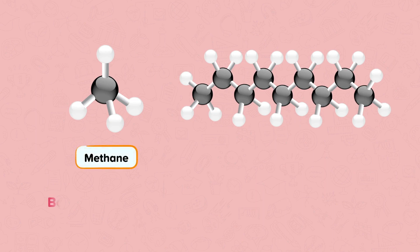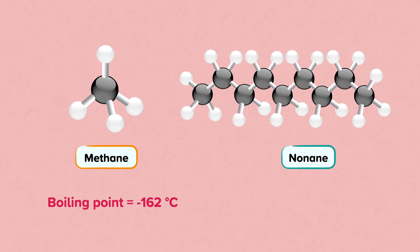For example, methane has a boiling point of minus 162 degrees Celsius. Longer hydrocarbons have higher boiling points. For example, nonane has a boiling point of 151 degrees Celsius.